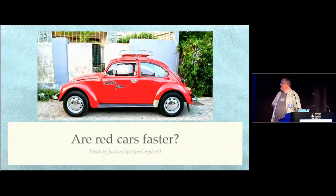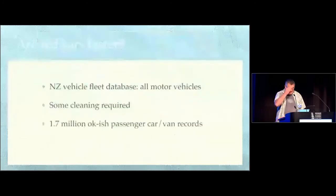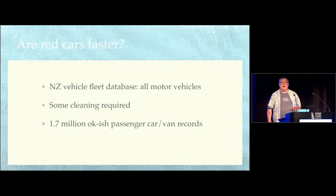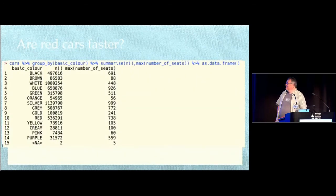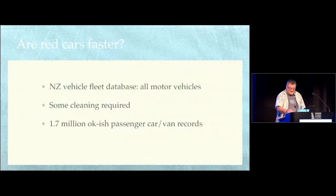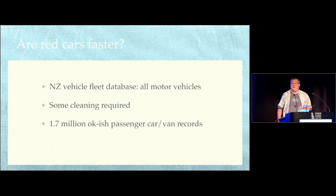So here's the data analysis, are red cars faster. So we've got the New Zealand fleet, vehicle fleet database. So that's all motor vehicles in New Zealand, whether they're currently registered or not. It's about five and a half million of them. So there's a bit of data cleaning required, but we can do that. We have the technology. And we end up with about 1.7 million sort of apparently OK records for passenger cars or vans.